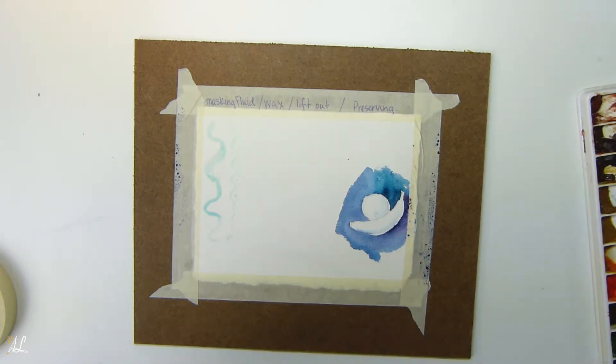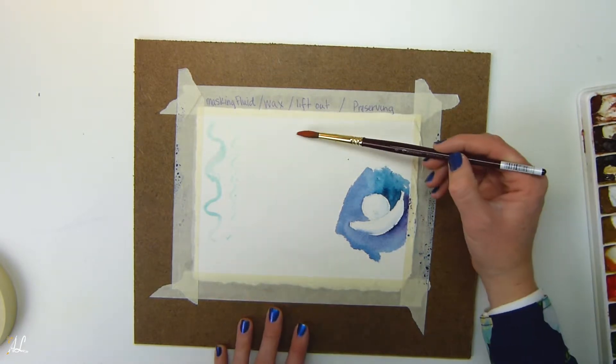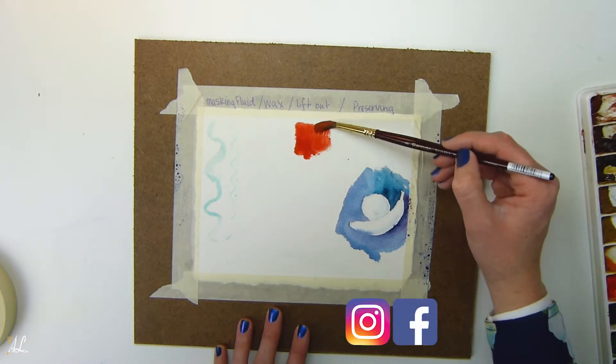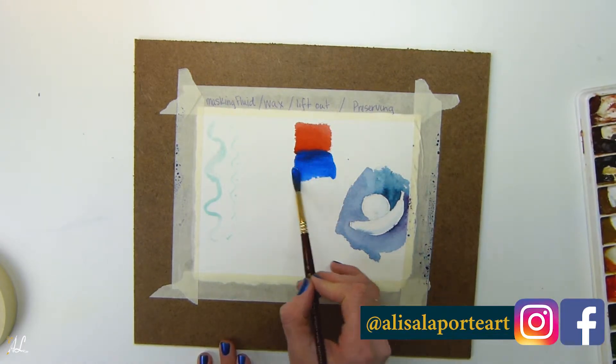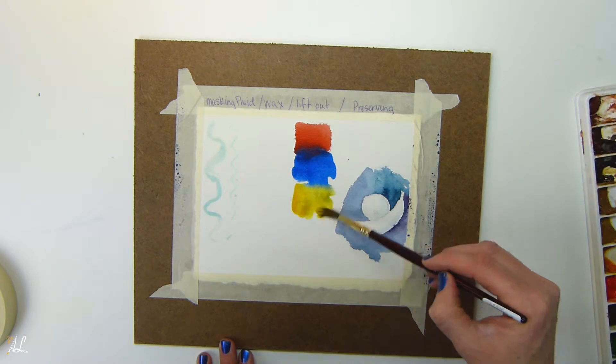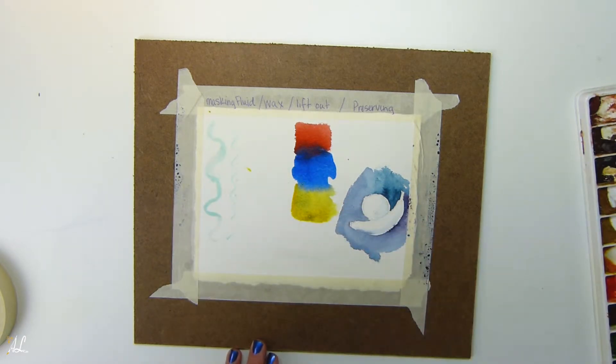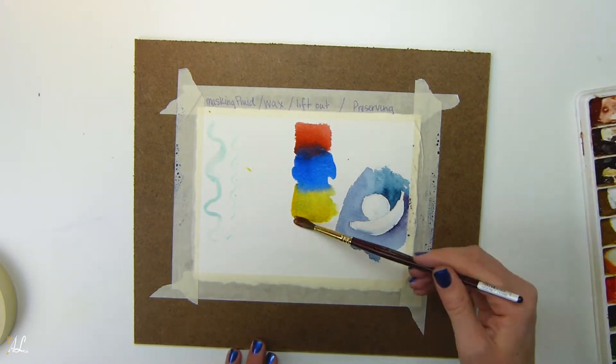So to lift out I'm going to put color here first. I'll show you different colors so you can see how different colors react to being lifted out. Start with a red and then we're going to go to a blue, to a yellow. We'll have some green in it. We'll use a brown.